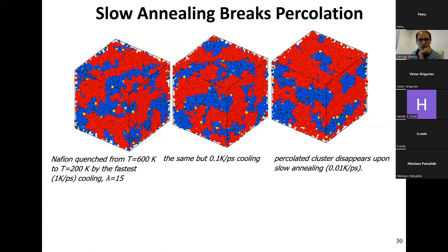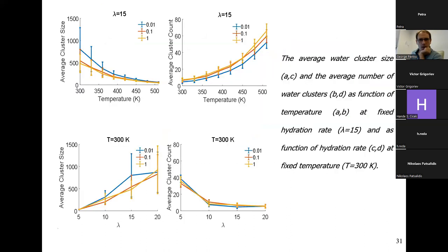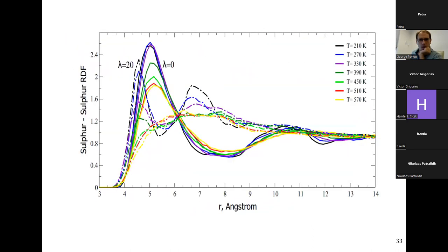Cluster size distribution analysis shows that slower cooling produces larger but fewer water clusters — large and less connected. This is the message from cluster analysis done with OVITO software. Because of this breaking of percolation, the diffusion constants of water and hydronium are very sensitive to cooling rate: the slowly cooled system always shows lower diffusion at fixed lambda.